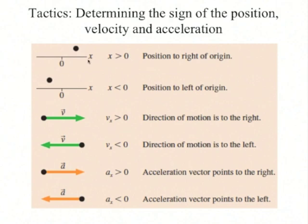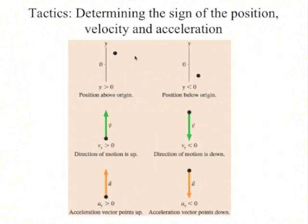For horizontal motion, you set up an x-axis. Positions to the right of zero have x positive; positions to the left have x negative. Velocities towards the right have v_x positive; velocities towards the left have v_x negative. Accelerations towards the right have a_x positive; accelerations to the left have a_x negative. Similarly, for vertical motion, positions above zero have y positive, below have y negative. Upward velocities have v_y positive, downward velocities v_y negative. Upward acceleration has a_y positive, downward a_y negative. For example, free-fall acceleration has a_y equals negative 9.8 meters per second squared.